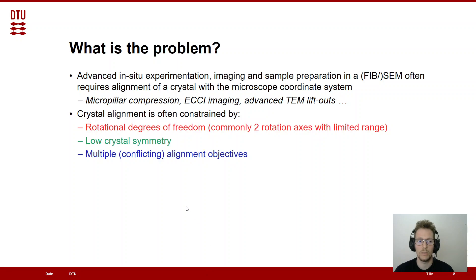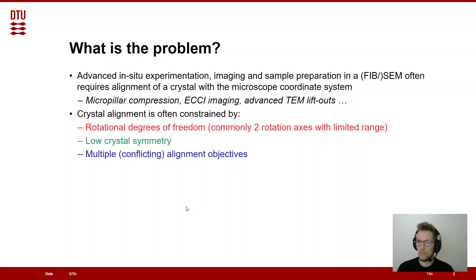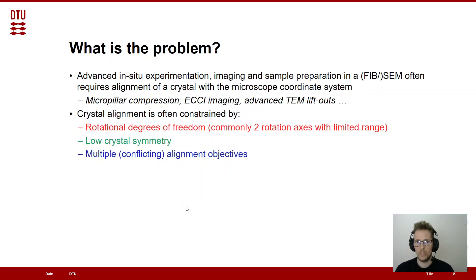So what is the problem that we're trying to solve here? In advanced in situ experimentation, imaging, and sample preparation in a scanning electron microscope, possibly with a focused ion beam, we often require alignment of a crystal with the microscope coordinate system. This is of course interesting for crystalline materials such as metals. Examples of this are micro pillar compression where we want to probe a certain crystal direction, ECCI imaging where we want to get the contrast of a certain crystal direction, or advanced TEM liftouts where we need certain crystal directions to be aligned in the transmission electron microscope analysis.